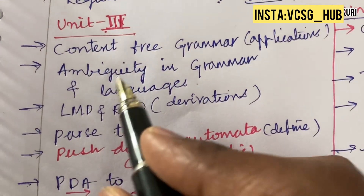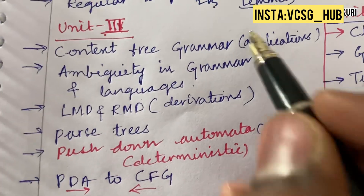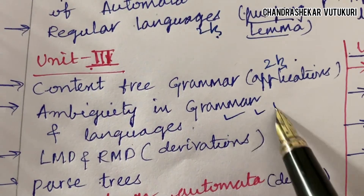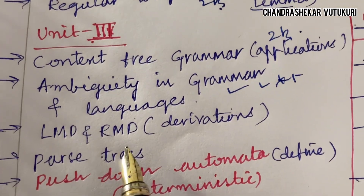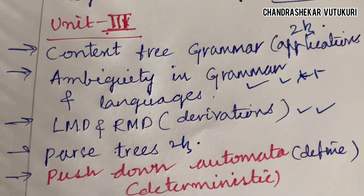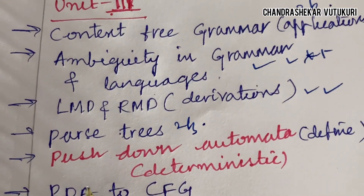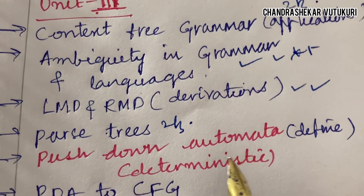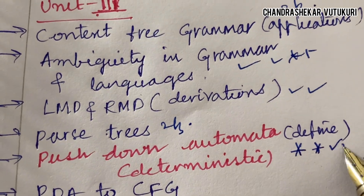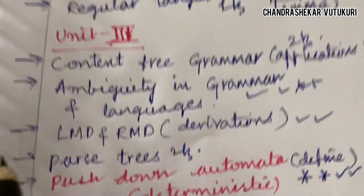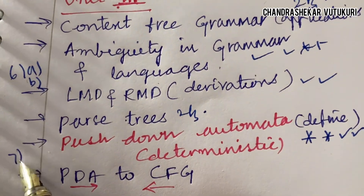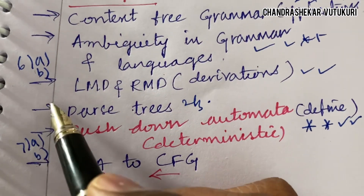Next, let's look at Unit 3 — which covers Unit 4 in the syllabus. Context-free grammar and its applications may be a 2 or 3 mark question. Ambiguity in grammar and language may be a long question. LMD and RMD and their derivations may be a topmost question this time. Parse tree — define the term — may be a 2 or 3 mark question. Push down automata, including deterministic PDA and defining the term, may be a 2 or 3 mark question. From this part, you can expect Q6A and Q6B as well as Q7A and Q7B.